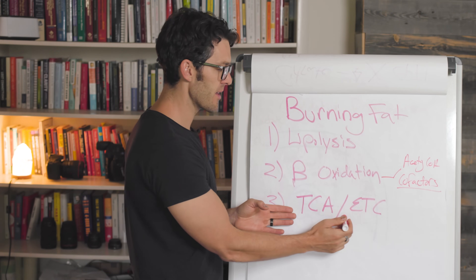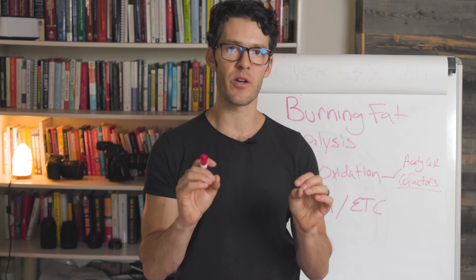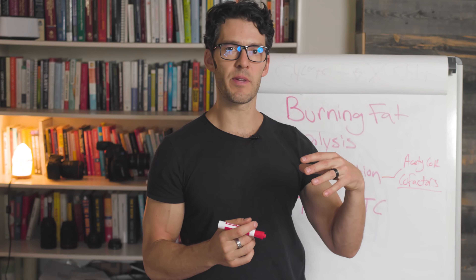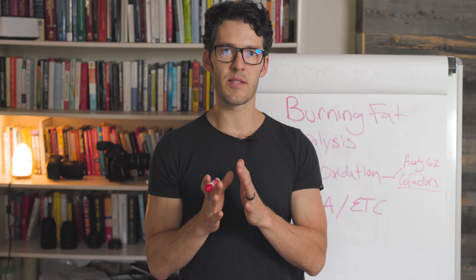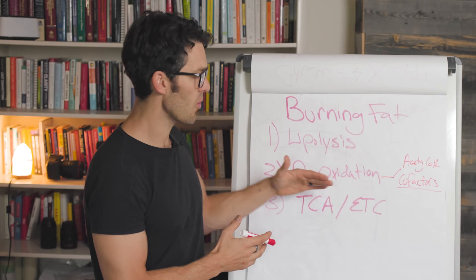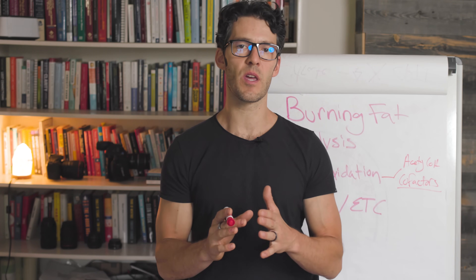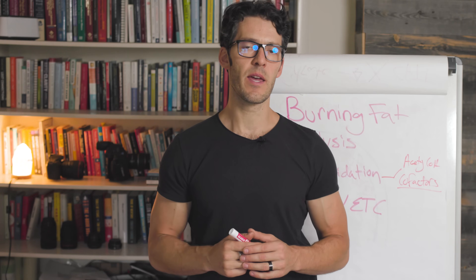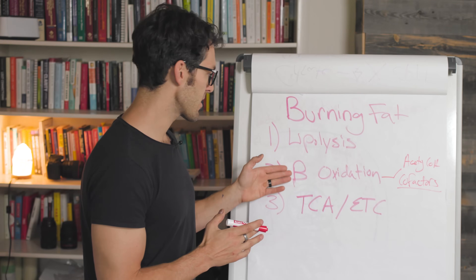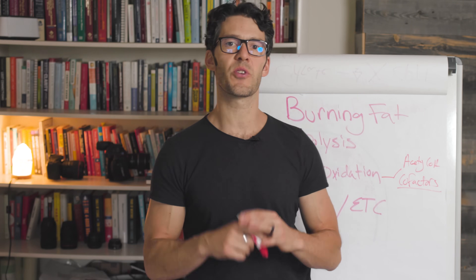Let's dive into video part three. We're going to talk about the Krebs cycle and the electron transport chain, which is really how we make cellular energy. The whole point of this video series is to help you understand that when you eat something, you can't directly oxidize it for fuel — it needs to be converted through a series of reactions to ultimately make ATP, most efficiently within our mitochondria through beta oxidation, the Krebs cycle, and oxidative phosphorylation.